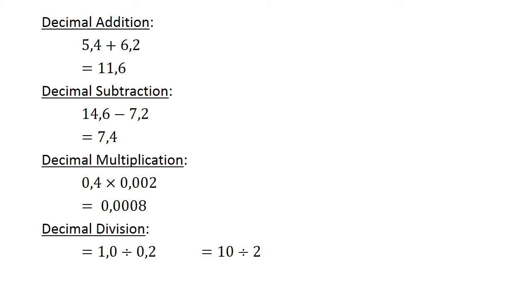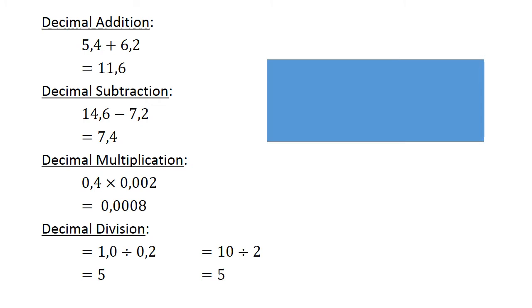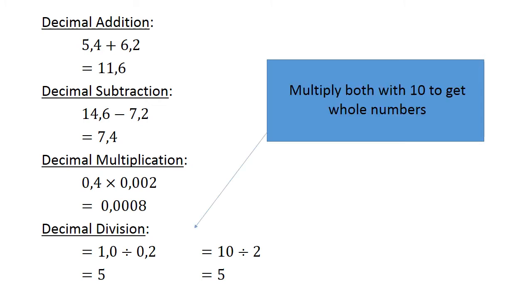Decimal division. 1.0 divided by 0.2 equals 5. Multiply both by 10 to get whole numbers, and then you divide by 2.